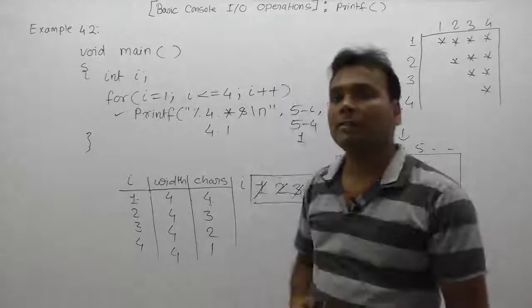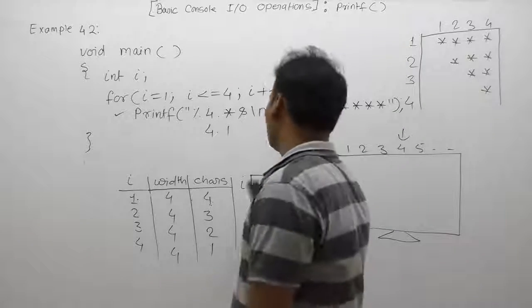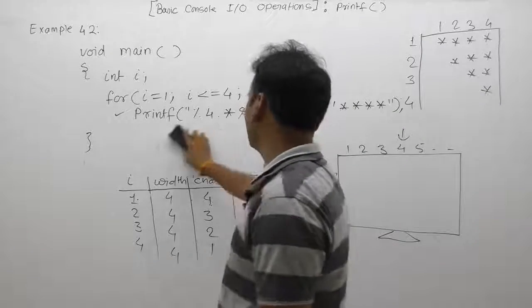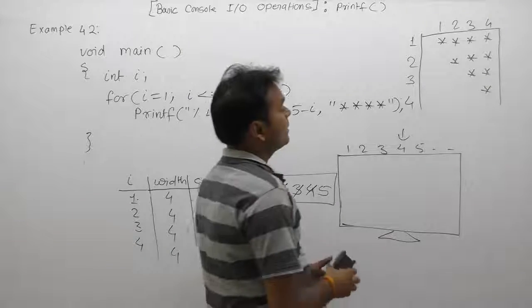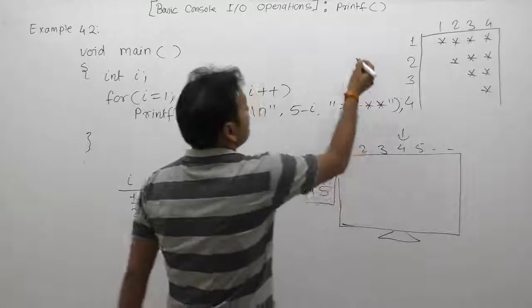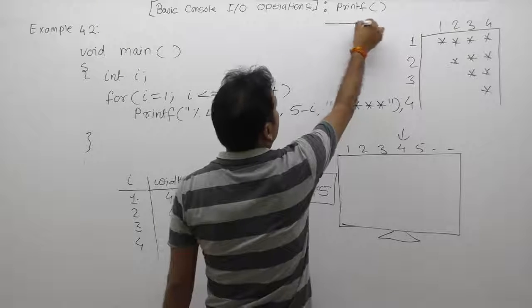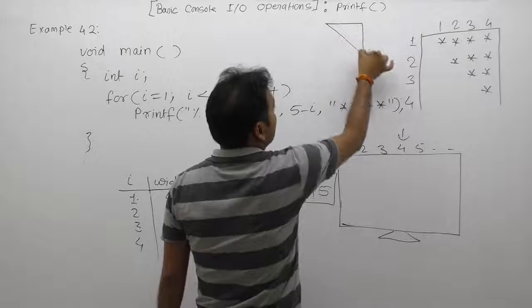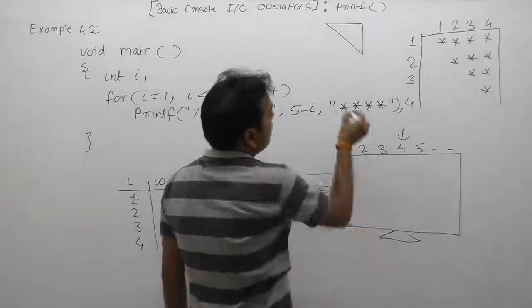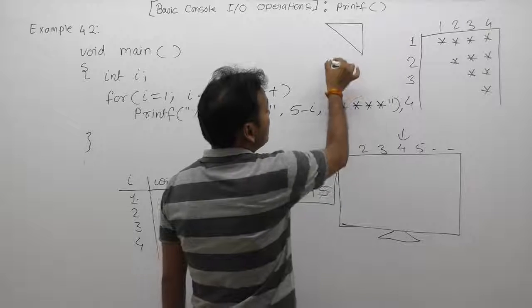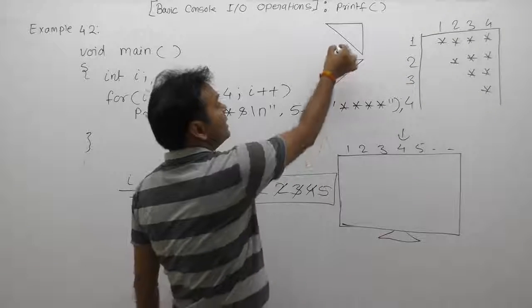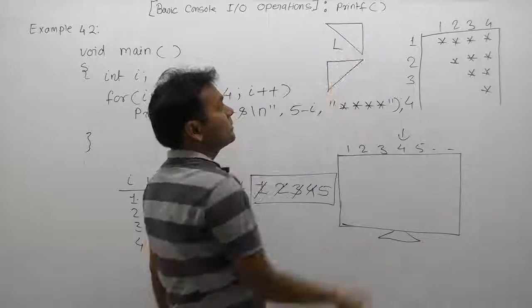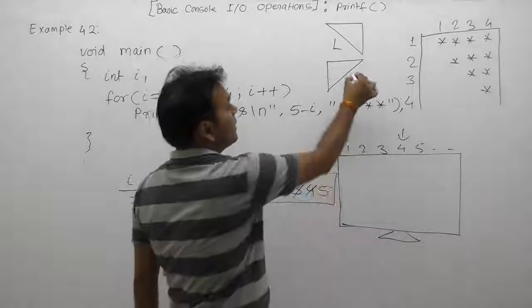Now again we are taking the same example as Example 41, but here we want to display a different pattern. In previous cases we were displaying the pattern in that form, but we want to convert the same pattern like that. In previous cases we were writing spaces on the left position, but in this case we want to write spaces on the right positions.